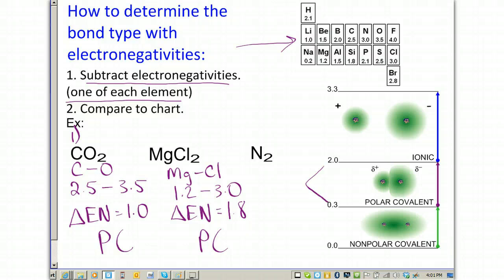Recall that these two compounds, CO2 and MgCl2, are unequally sharing their electrons. And the more electronegative element has the stronger pull. So, in the case of CO2, oxygen has a stronger pull on the electrons. And MgCl2, the chloride has the stronger pull on the electrons.